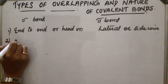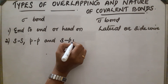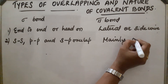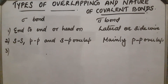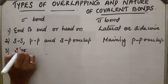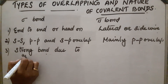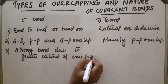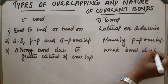Second point: in sigma bond, S-S overlapping, P-P overlapping, and S-P overlapping can take place, but in the case of pi bond, mainly P-P overlap takes place. Third point: sigma bond is a strong bond due to the greater extent of overlap, whereas pi bond is a weak bond due to the lesser extent of overlap.